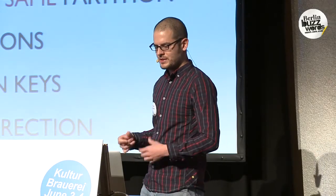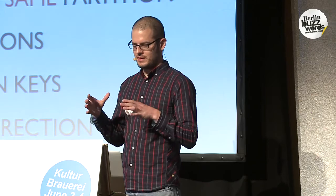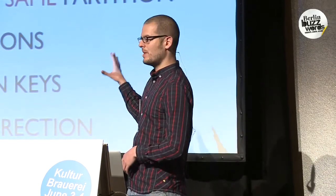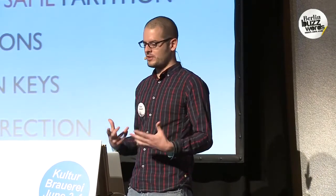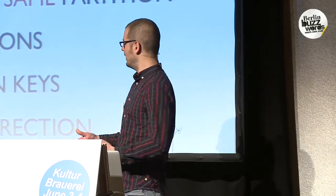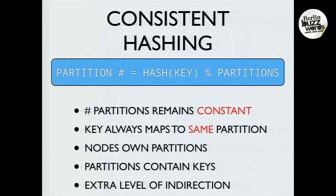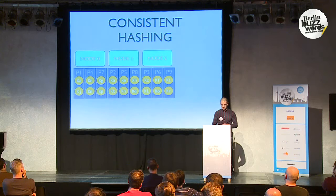So then there's the idea of consistent hashing. Consistent hashing is basically the same idea, except you bring in a new abstraction — you think of something called a partition. You take the hash of the key and modulo it by your partitions. The difference is the number of partitions remains constant all the time, and a key always maps to the same partition. The nodes own partitions, and the partitions contain the keys — so you have this extra level of indirection. If anyone here knows React, you might have heard Vnode, which stands for Virtual Node — that's the reified idea of a partition. Every computer science problem is solved by one level of indirection, and that's exactly what consistent hashing gives you.